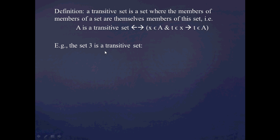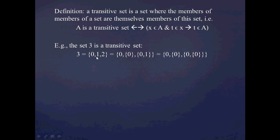And this is best illustrated through an example. We're going to end up showing that all natural numbers are transitive sets. So let's take the example of the set 3. The set 3 is just the set {0, 1, 2}. And remember that 1 is the set containing 0, and 2 is the set containing 0 and 1. So I can rewrite this set as a single expanded set expression.